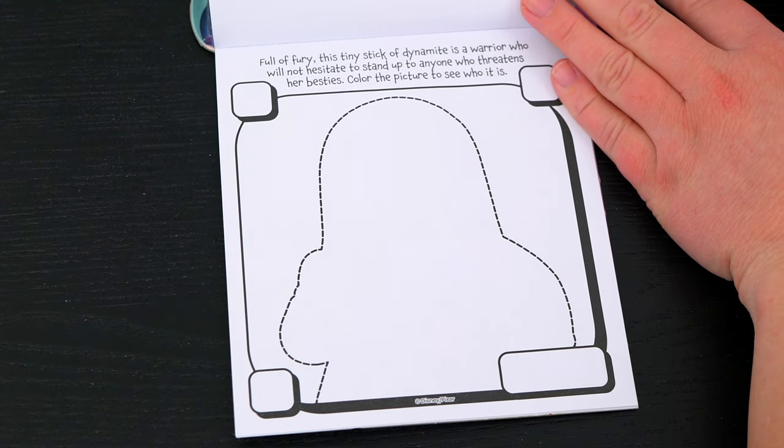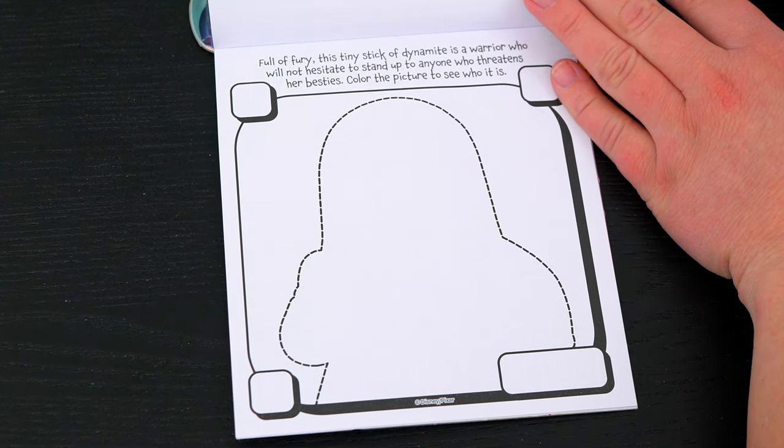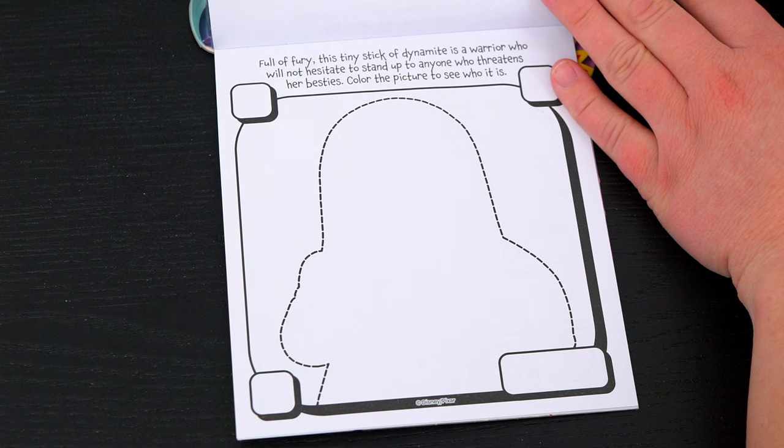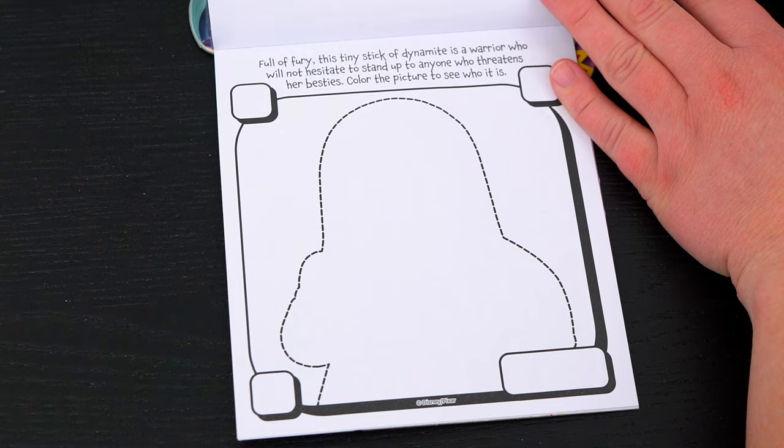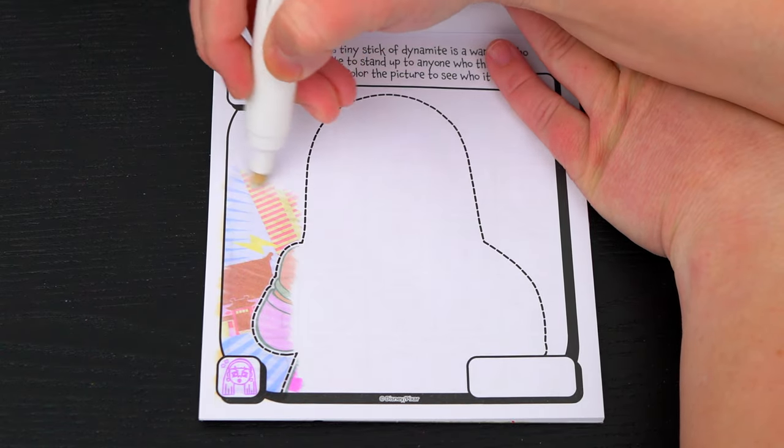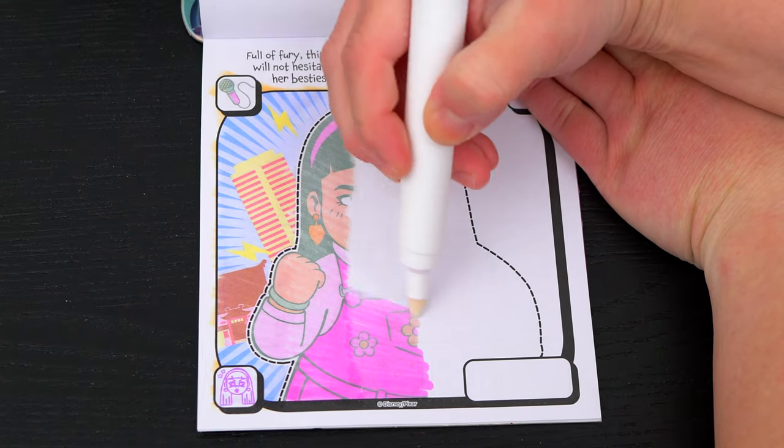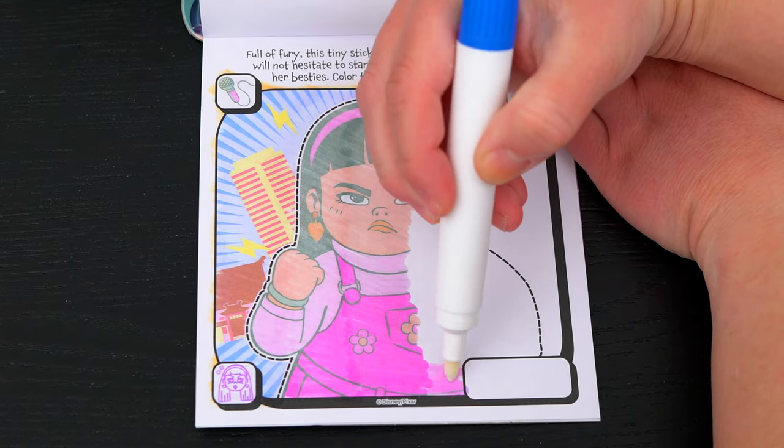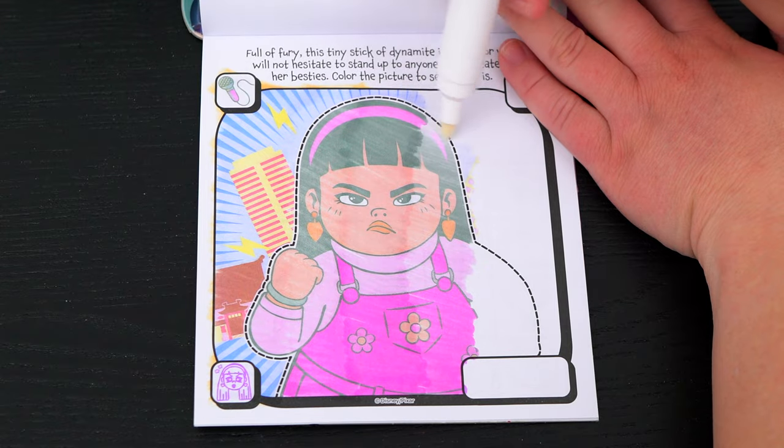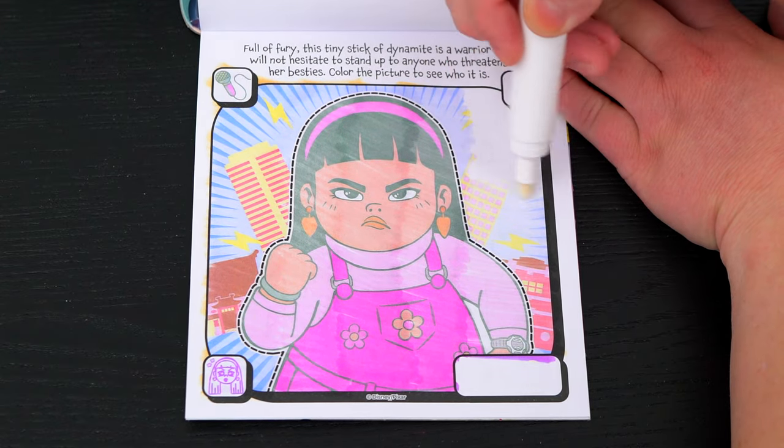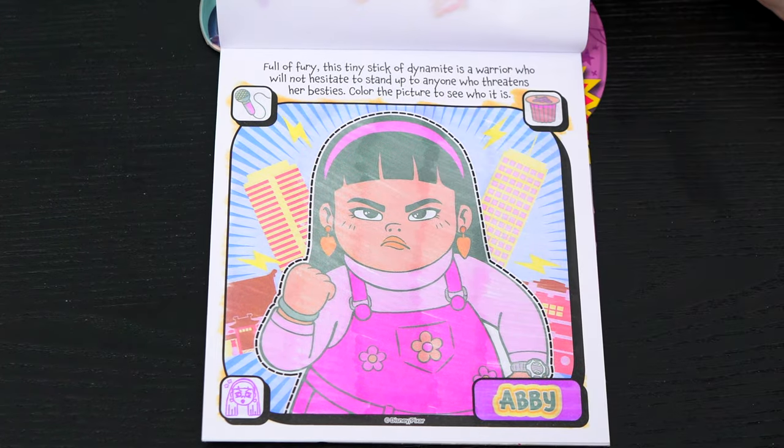Full of fury, this tiny stick of dynamite is a warrior who will not hesitate to stand up to anyone who threatens her besties! Color the picture to see who it is! It's Abby!